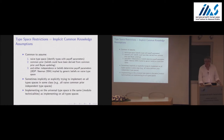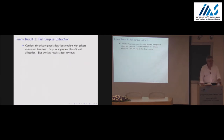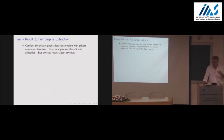When we get wacky conclusions in mechanism design, it probably has to do with implicit common knowledge assumptions that are too strong. It's particularly dangerous in mechanism design because then you get conclusions that are too finely tuned to the implicit common knowledge assumptions you've made. Let me talk about some well-known results in this literature and highlight what they have to do with making too-strong common knowledge assumptions.